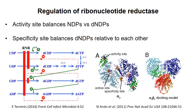This chart summarizes how the enzyme is regulated. When ATP binds to the activity site, the enzyme is active. Initially, the enzyme will favor reduction of pyrimidines to make dCDP and dUDP. These can be converted to dTTP, as I'll describe in a minute.